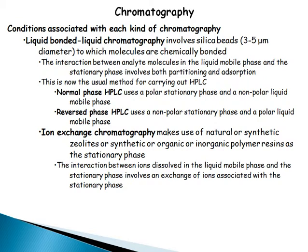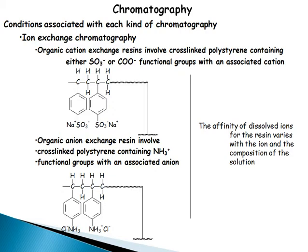The normal phase of HPLC uses a polar stationary phase and a non-polar liquid mobile phase. Reversed phase HPLC uses a non-polar stationary phase and a polar liquid mobile phase. Ion exchange chromatography makes use of natural or synthetic organic and inorganic polymers as the stationary phase. The interaction between ions in the liquid mobile phase and the stationary phase involves an exchange of ions associated with the stationary phase, involving cross-linked polystyrenes.